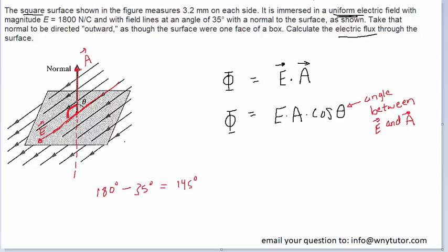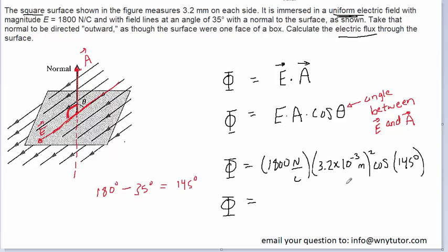Notice for the area that we converted the 3.2 millimeters into the standard unit of meters by multiplying the 3.2 by 10 to the negative 3. The area was length times width. They're both the same value because it's a square, so we basically just took the length of the square and squared it.